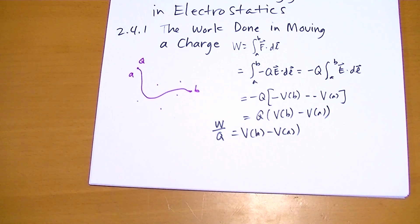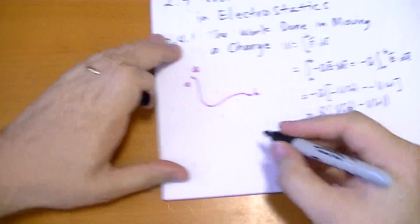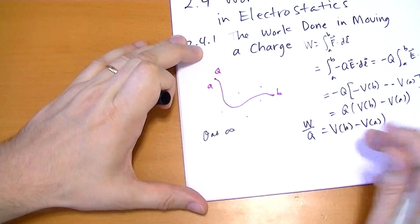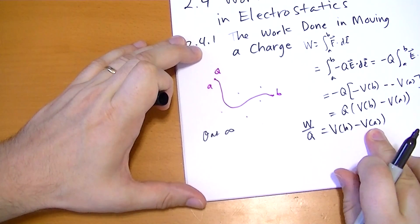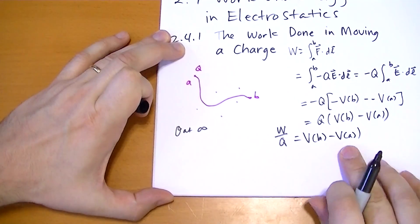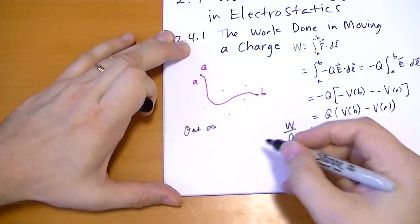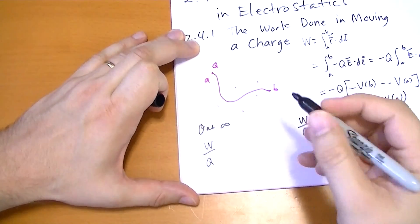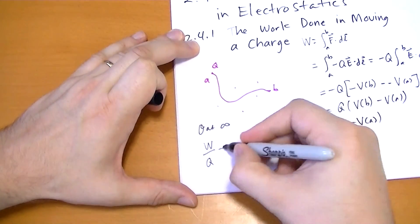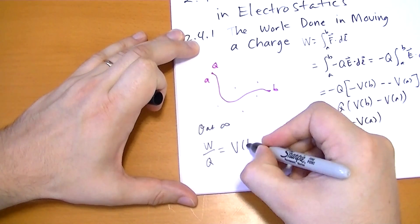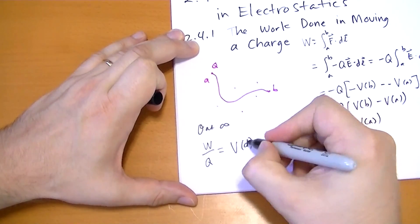Now if we take our reference point O at infinity, then the potential at the place we started from, V_A, will be zero for a well-behaved field and potential. So we can really just say the work to move a charge from infinity to a certain point is just equal to the potential at that point — call it P — times the charge Q.